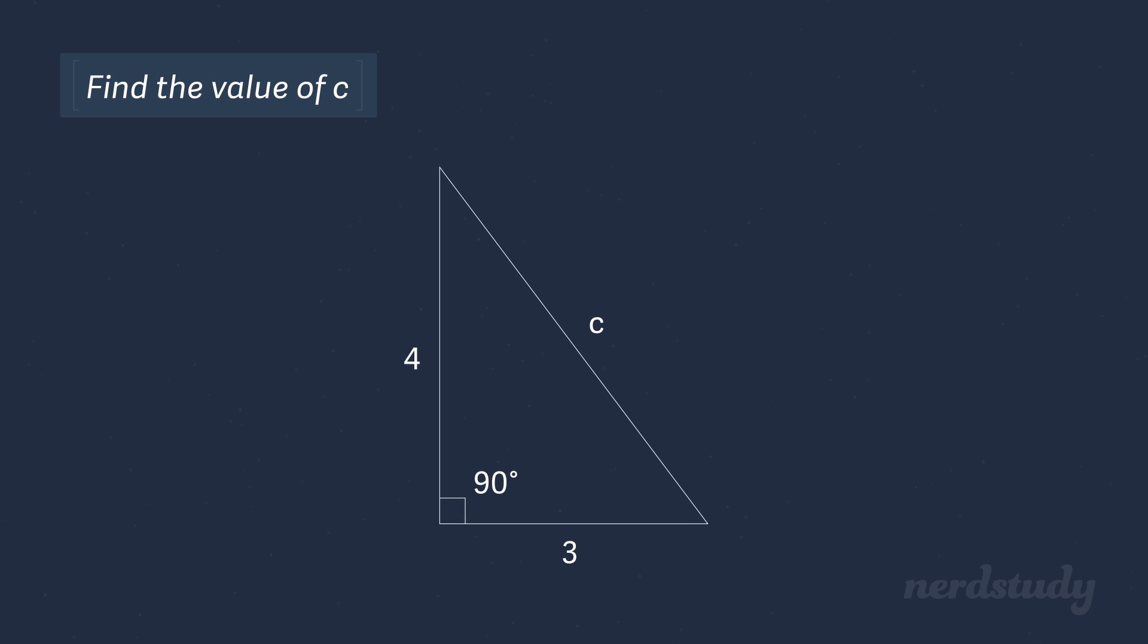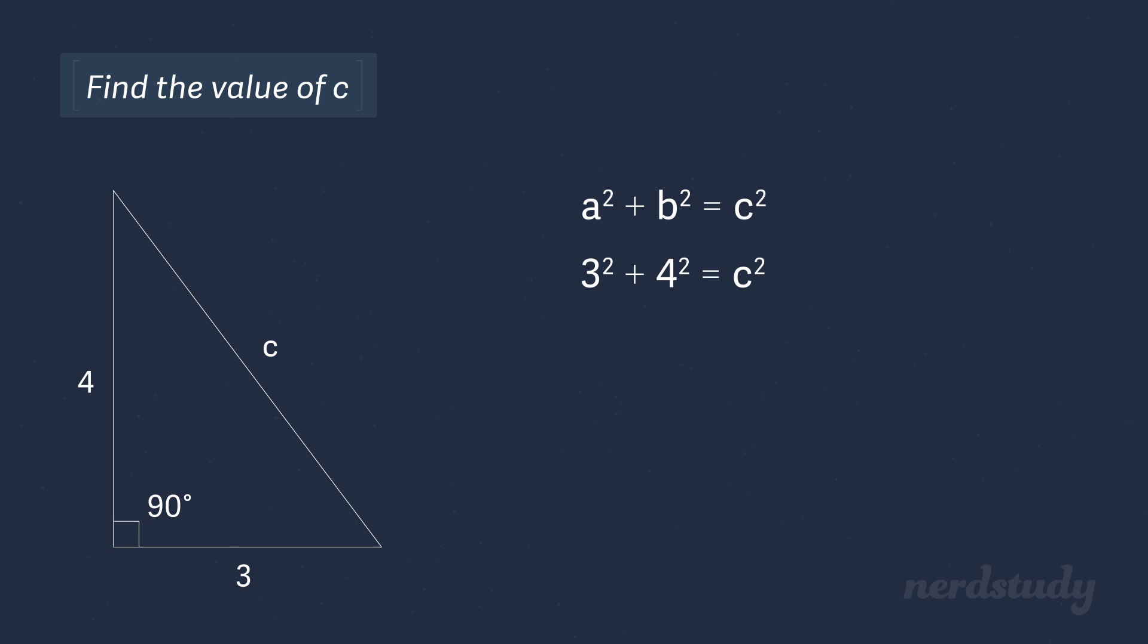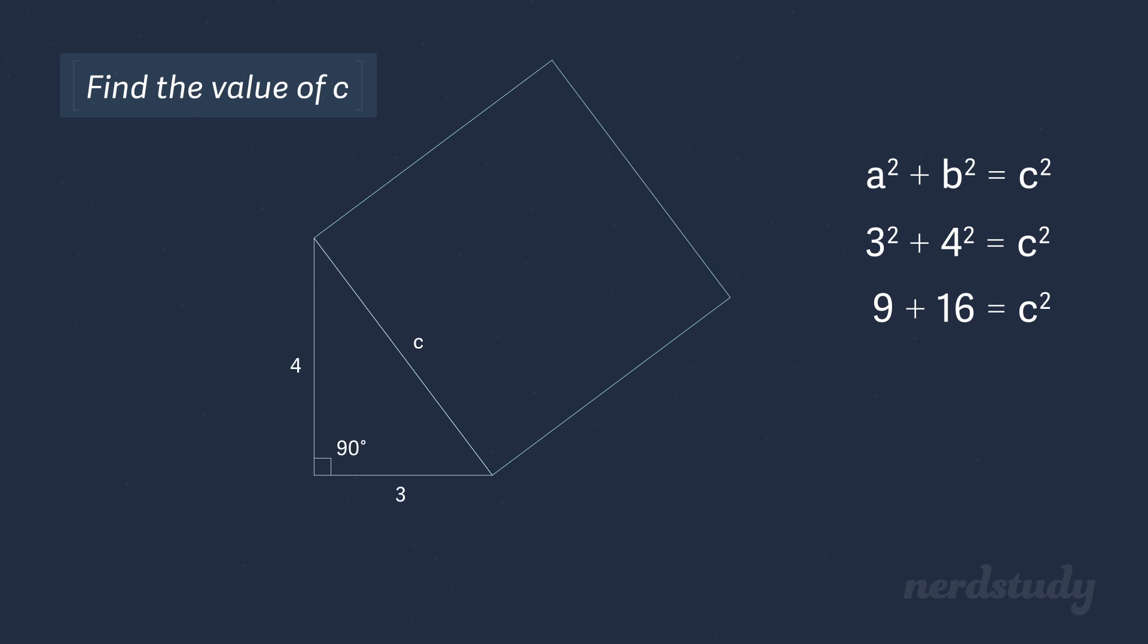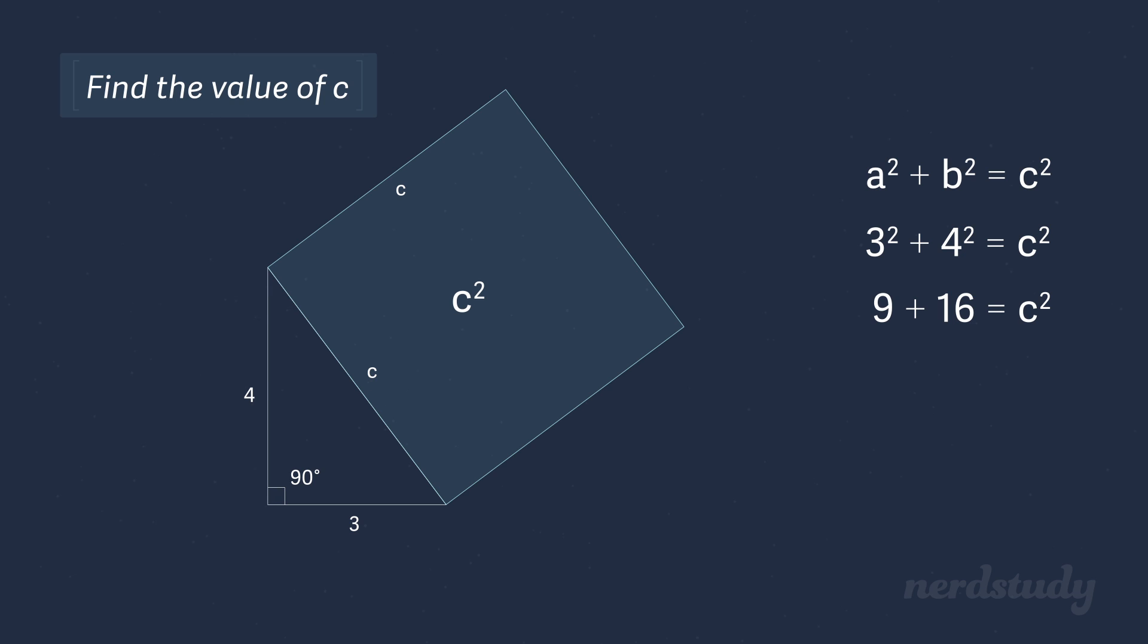We start off by writing the Pythagorean theorem at the top: a² + b² = c². We fill in the information that we know at our disposal. We get 3² + 4² = c². So in our previous illustration of the Pythagorean theorem, we realized that squaring each side of the triangle was the same thing as finding the area of a square that was determined by each side length. Now if we apply that same idea to this example, we see that 3² is 9, which is the area of this square here. Squaring this side over here gives us an area of 16. To find the area of the hypotenuse squared, all we have to do is add these two areas together. We get an area of 25.